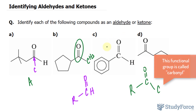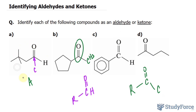Looking at this one, it has the same configuration as what we saw in A. We have carbon double bonded to oxygen and a hydrogen with the rest of the molecule. So this is an aldehyde.